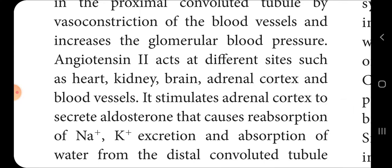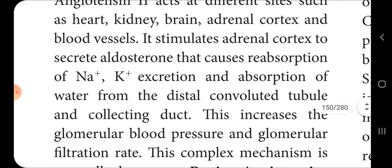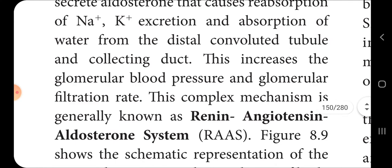Angiotensin 2 acts at different sites such as the heart, kidney, brain, adrenal cortex, and blood vessels. It stimulates the adrenal cortex to secrete aldosterone, which causes reabsorption of sodium ions, excretion of potassium ions, and absorption of water from the distal convoluted tubule and collecting ducts. This increases glomerular blood pressure and glomerular filtration rate. This complex mechanism is known as the renin-angiotensin-aldosterone system (RAAS).